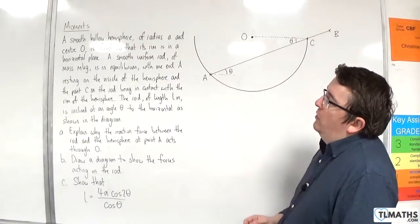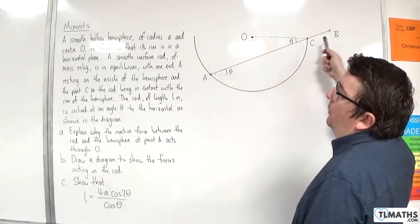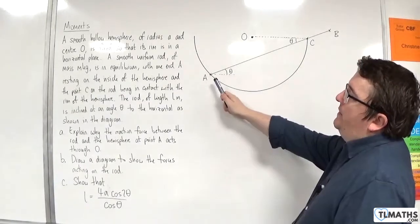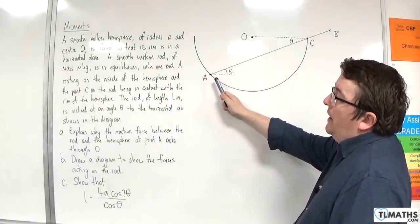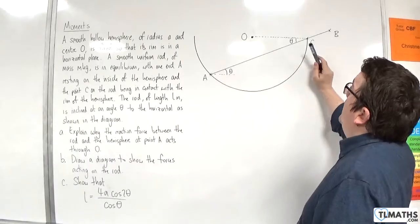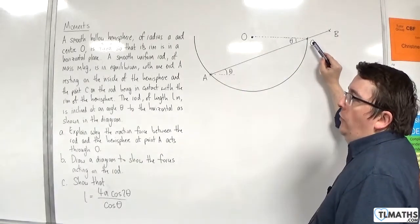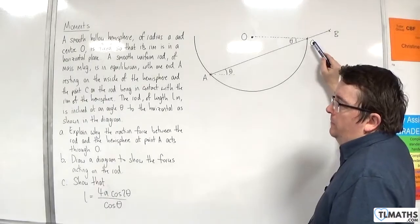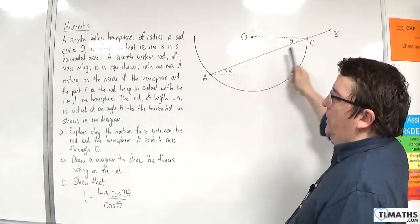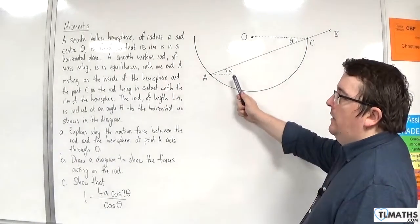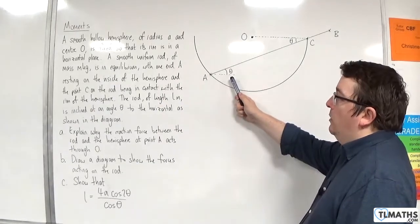A smooth uniform rod of mass m kilos is in equilibrium with one end A resting on the inside of the hemisphere and the point C on the rod being in contact with the rim of the hemisphere. The rod of length L metres is inclined at an angle theta to the horizontal as shown in the diagram.